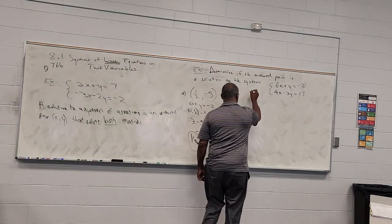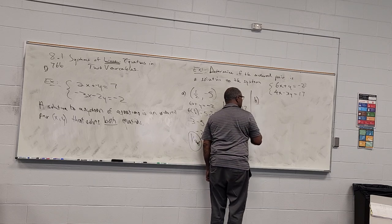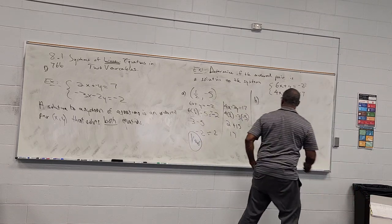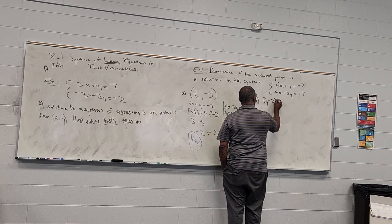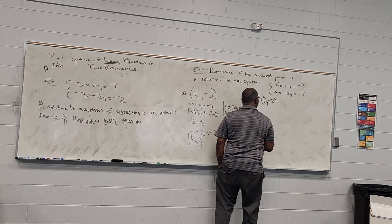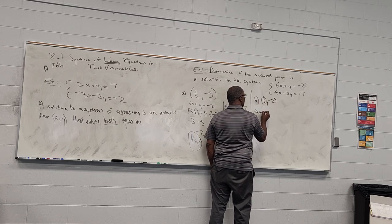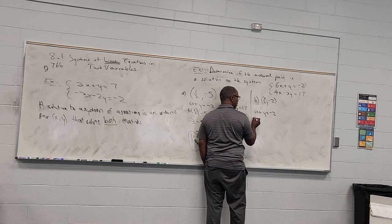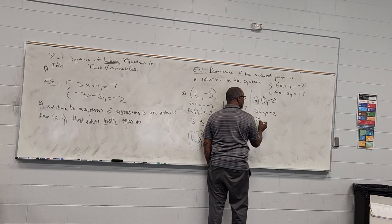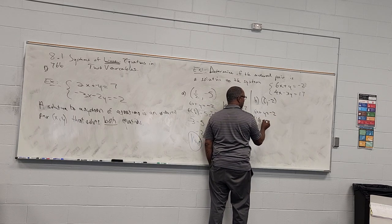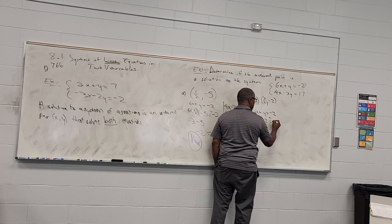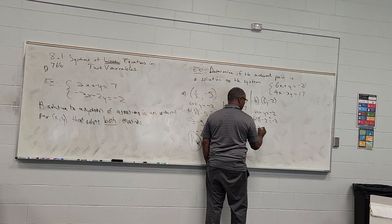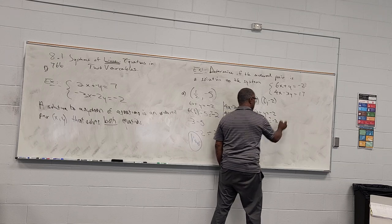Let's look at part b, the ordered pair (0, negative 2). Take the first line: 6x plus y equals negative 2. Where I have x I put 0, where I have y I put negative 2. Six times 0 is 0, so we get negative 2 equals negative 2. That's fine — it satisfies the first equation.